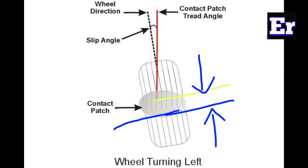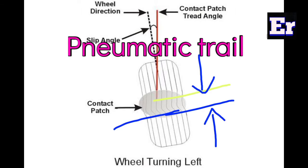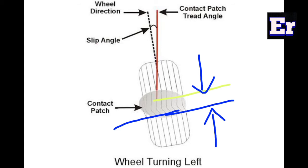The distance between the static center of pressure and the dynamic center of pressure is called the pneumatic trail. The magnitude of pneumatic trail depends on the degree of creep between the ground and tire contact patch, the vertical load on the tire, tire inflation pressure, vehicle speed, and tire construction. For example, comparing cross-ply with radial-ply tires, radial-ply tires provide a larger contact patch area, meaning they have a higher pneumatic trail than cross-ply tires.